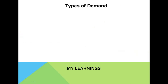Following are some of the different forms of demand. Joint demand refers to a kind of demand where the products are demanded jointly. For example, ink pen and ink, car and petrol, etc. Such products are demanded jointly — for example, there won't be any demand for ink if the ink pen is not there, and vice versa.